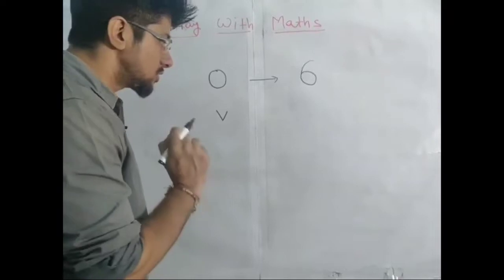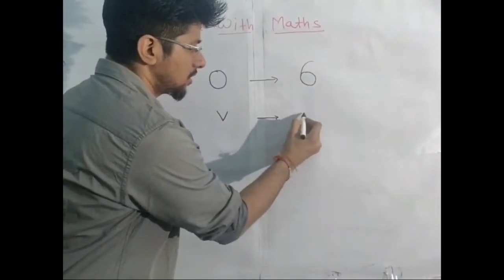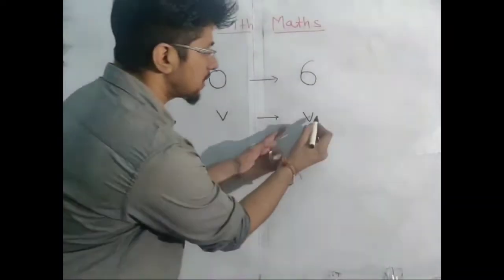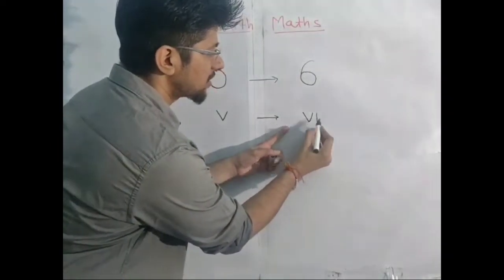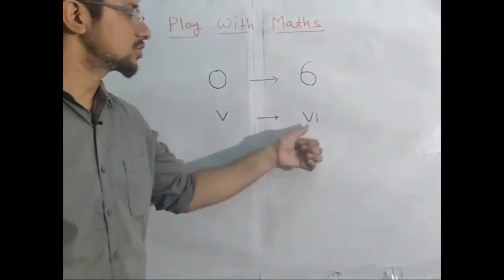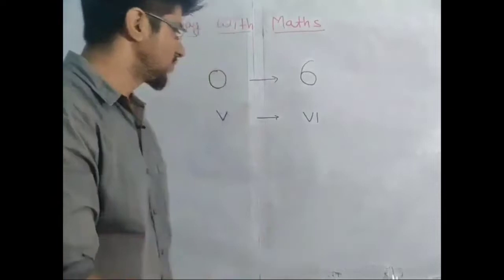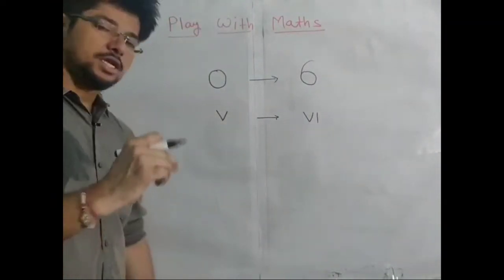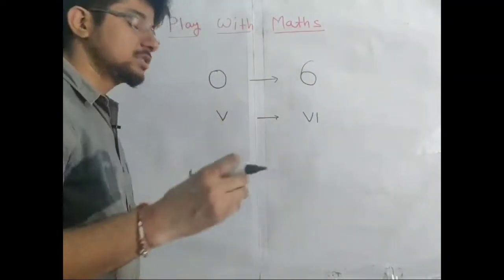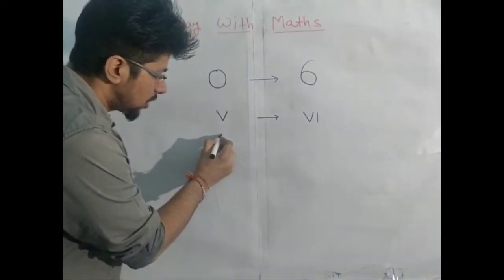So the answer is: take what is given and make a straight line. This becomes Roman numeral six — VI. It's Roman six, but still it is six! Okay, the next one is even more interesting.